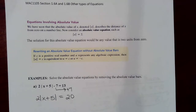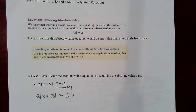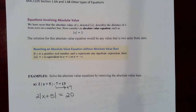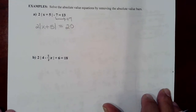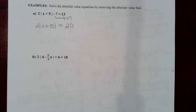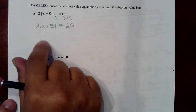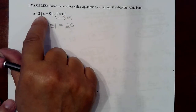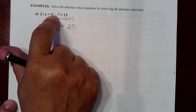This is a continuation of section 1.6 MAC 1105. We had just begun to look at solving equations involving absolute value and we were on this first example. We had discussed that when you solve an absolute value equation you need to isolate the expression inside the absolute value bars first.